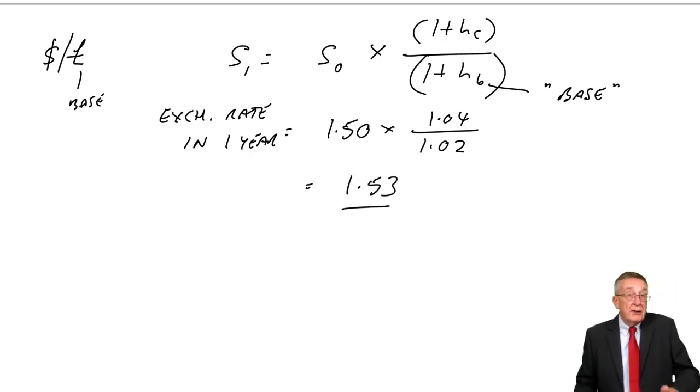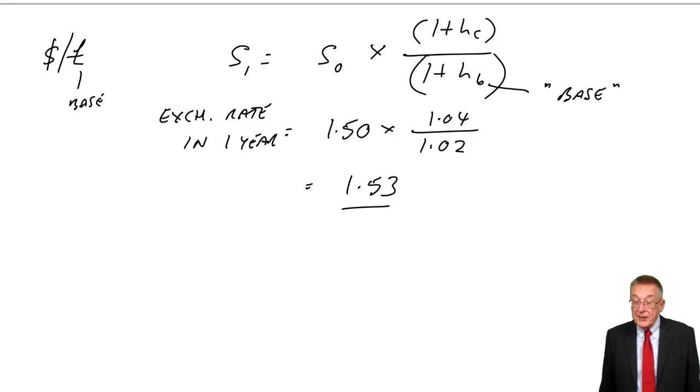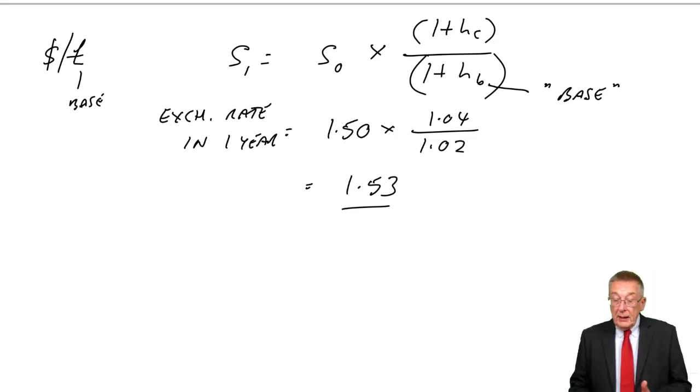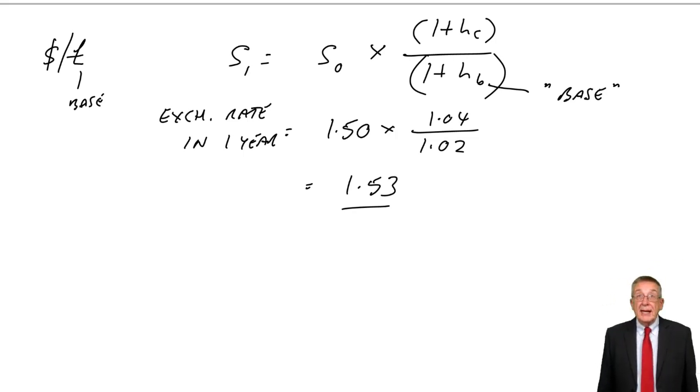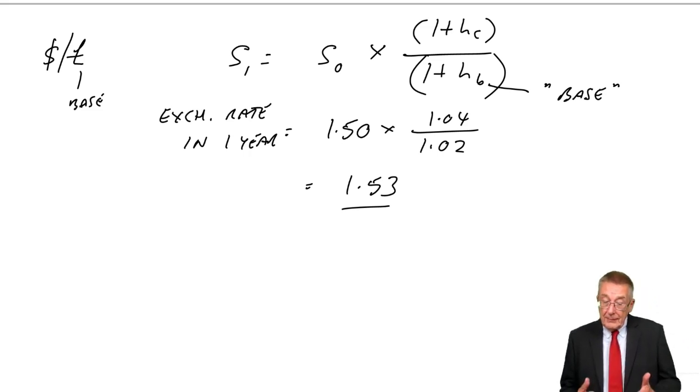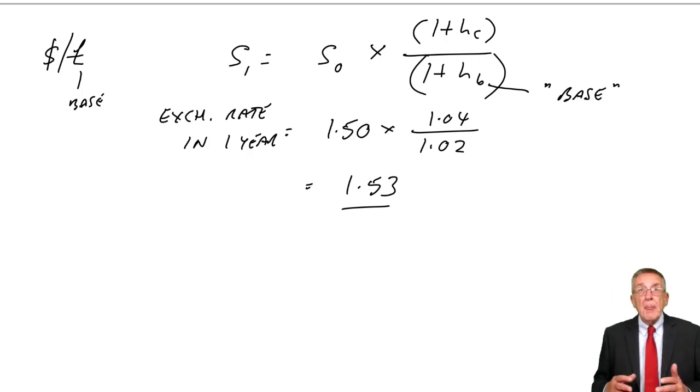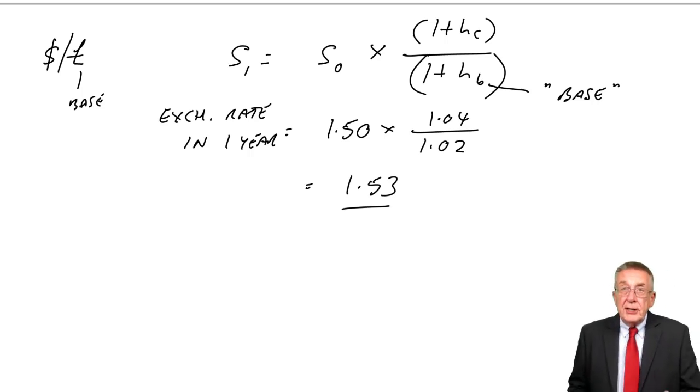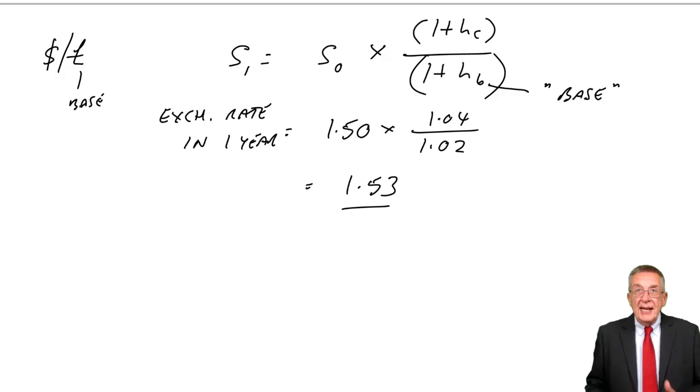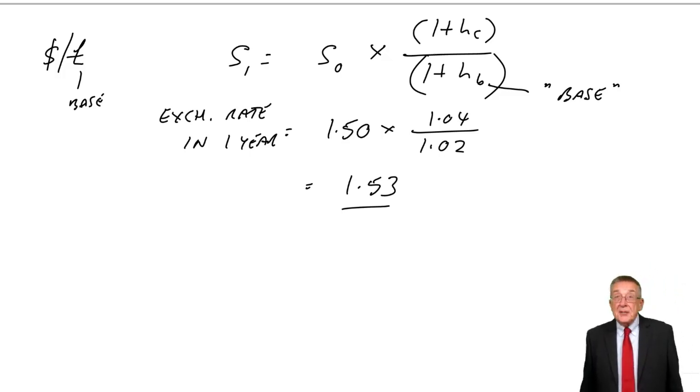1.53. I'll keep to two decimal places. The current exchange rate was given to two places. But of course, that's exactly what I got before. So using the formula is actually very quick indeed. It's just the importance of remembering which inflation rate is top and which is bottom, HC, HB.